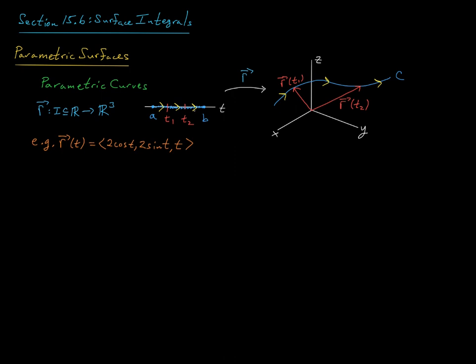As we let t vary over some interval in the real line, this vector r of t, which you can think of as the position vector of some moving object, is going to trace out some path, some curve c in r3. And we call r of t here a parameterization of this curve c.